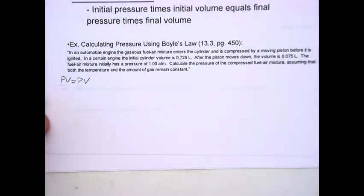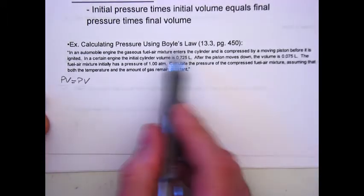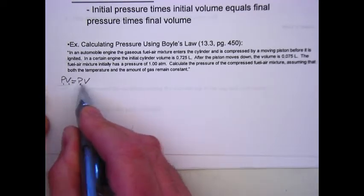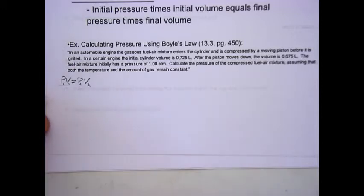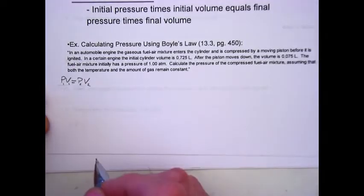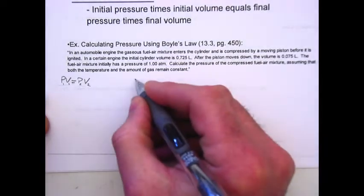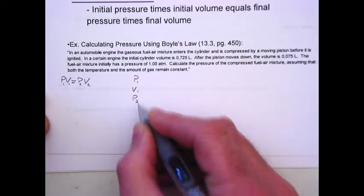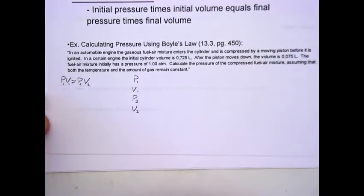First we have a sample problem for using Boyle's Law, which is P1 times V1 is equal to P2 times V2. We first go through and list out all of the symbols. We have initial pressure, initial volume, secondary pressure, and secondary volume.